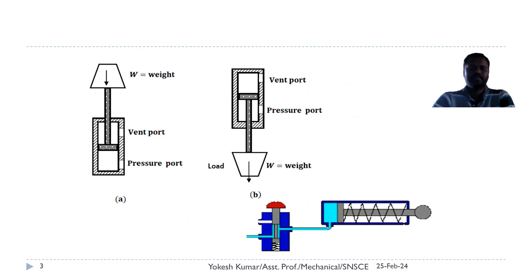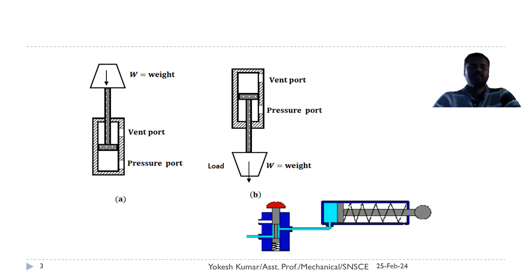This is another type of single-acting cylinder where a spring is not used, since it is a vertical cylinder. In case A, we apply pressure at the pressure port. If the pressure of the fluid exceeds the weight of the load, it moves upward. When pressure reduces, gravity automatically brings it back to its original position — that stroke is called the retraction stroke.